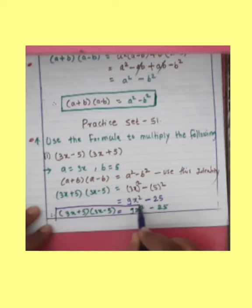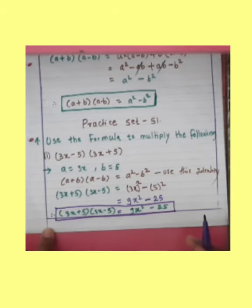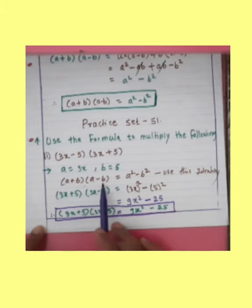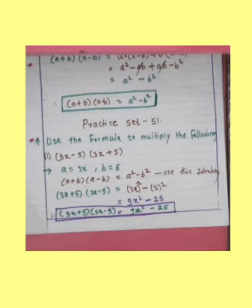Look at this, student — how to solve this example. Do you understand, student, how to solve this example? By using the identity: A plus B into another bracket A minus B is equal to A square minus B square.